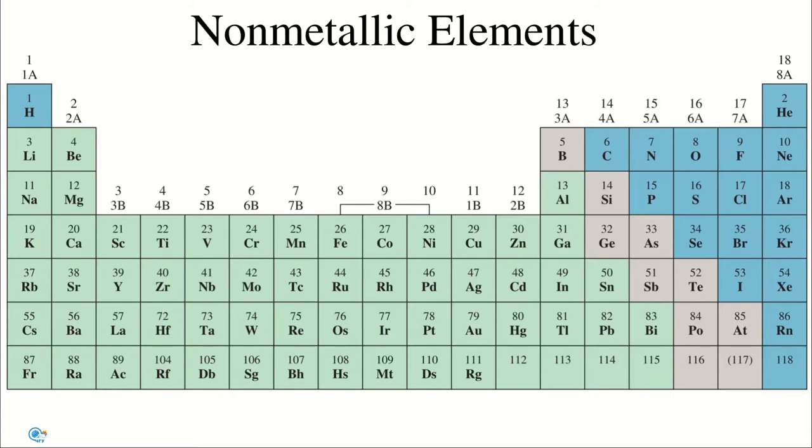Non-metals are more electronegative than metals. The electronegativity of elements increases from left to right across any period and from bottom to top in any group in the periodic table. With exception of hydrogen, the non-metals are concentrated in the upper right-hand corner of the periodic table.